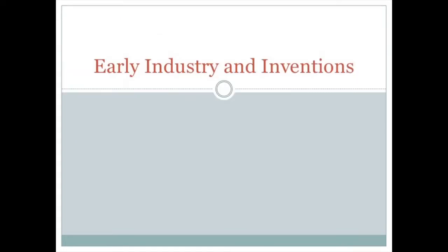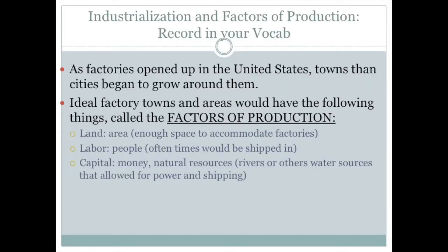Once again this evening we will be discussing early industry in the United States and the inventions that followed along with it. We will be discussing the inventions more in depth tomorrow in class. If you live in a country that wishes to be industrialized, there are certain things that every industrial country has to have, and these are called the factors of production.